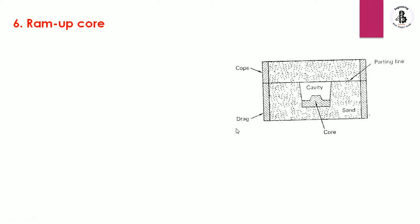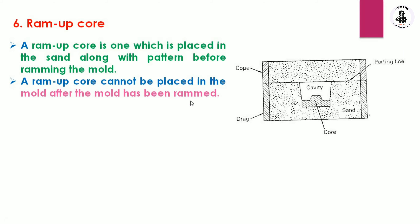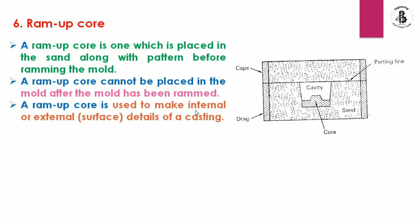The sixth is the ram-up core. The drag and cope are separated by a parting line, filled with sand, with the cavity and core placed accordingly. A ram-up core is one which is placed in the sand along with the pattern before ramming the mold. A ram-up core cannot be placed into the mold after the mold has been rammed. It is used to make internal or external details of the castings.